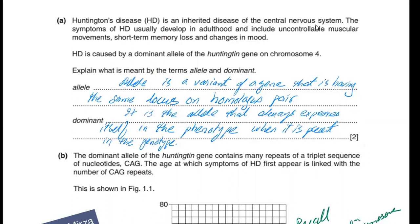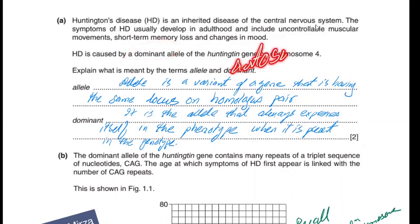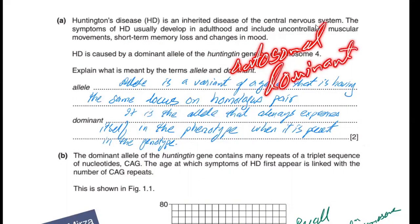Huntington's disease is an inherited disease of the CNS. The symptoms of HD develop in adulthood — mainly affecting and controlling muscular movement, short-term memory loss, and changes in mood. HD is caused by a dominant allele on chromosome 4. So this is an autosomal dominant disease. It's dominant because it's caused by a dominant allele, and autosomal because it's present on chromosome 4.